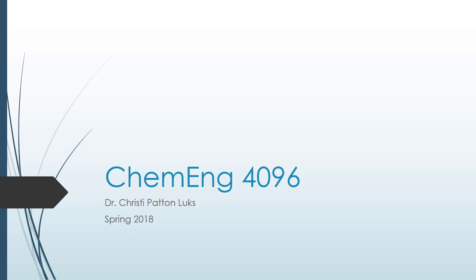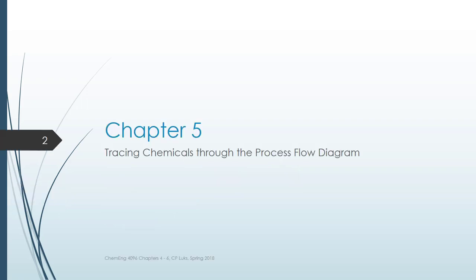Hello, this is Christy Patton-Lukes, and this is a recording for ChemEng 4096. In this lesson, we'll be looking at Chapter 5, which is Tracing Chemicals Through the Process Flow Diagram.